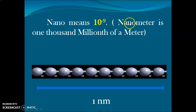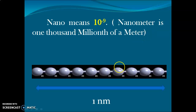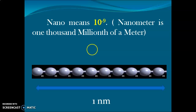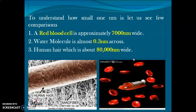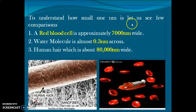Nano means 10 to the power of minus 9. One nanometer is one-thousandth millionth of a meter. It is a very small scale, and an enormous number of research efforts are ongoing in our day-to-day life. Many people around the world are working with nanomaterials. To understand how small a nanometer is, let us look at some comparisons.